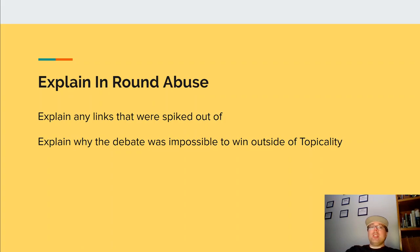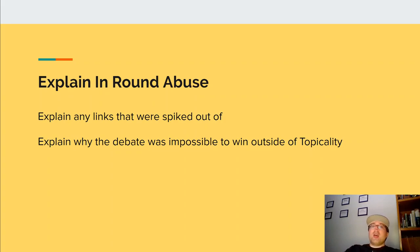Then if you can, you really want to explain in-round abuse. What links were spiked out of? Why was the debate impossible for you to win? You want those explanations so the judge can look at the affirmative team and say: you made it impossible for them to win, you need to be voted down, they did a good job in the 2NR.